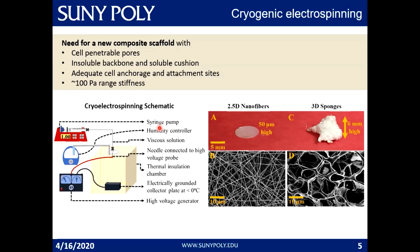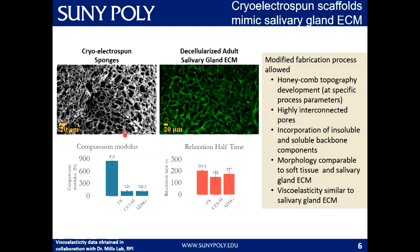Current state-of-the-art scaffolds don't have all of these properties concurrently. That is why we set out to fabricate a scaffold with all of these properties using a technique called cryogenic electrospinning. We modified the technique to produce three-dimensional scaffolds with pore sizes of the right size and interconnected pores. We were able to mimic the native extracellular matrix topographically and in terms of pore size, and we incorporated both insoluble backbone and soluble cushion components. We tested viscoelastic properties against the native adult decellularized gland.